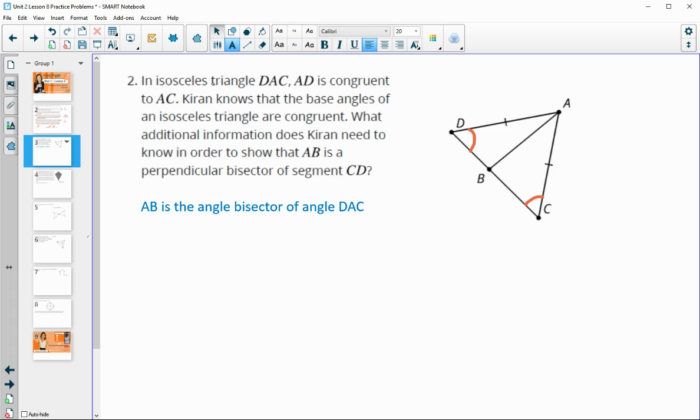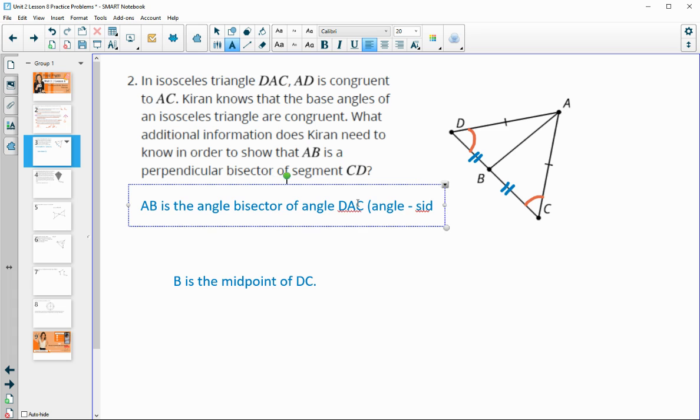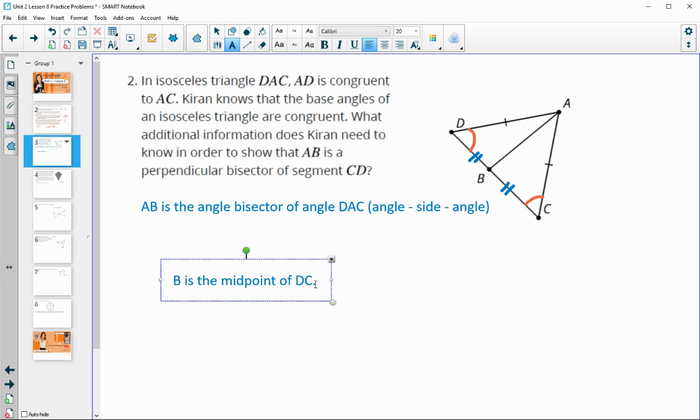We could also have that B is the midpoint of DC. And the reason that one would be helpful is that if we knew this was congruent to this, then we know the triangles were congruent by side angle side. So then you could get that those aren't equal angles that total 180. So those would be 90 as well. So this one would allow us to use angle side angle. This one would allow us to use side angle side.